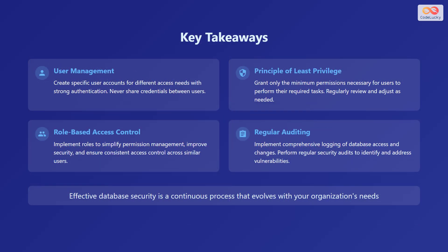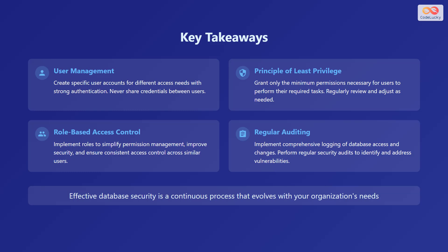To summarize the key takeaways: user management involves creating specific user accounts with strong authentication — never share credentials between users. The principle of least privilege dictates granting only the minimum permissions necessary, with regular review. Role-based access control simplifies permission management and ensures consistent access control across similar users. Regular auditing includes comprehensive logging of database access and changes, and performing regular security audits to identify and address vulnerabilities. Effective database security is a continuous process that evolves with your organization's needs.